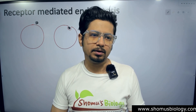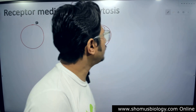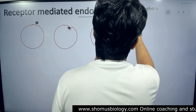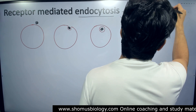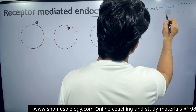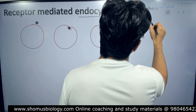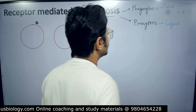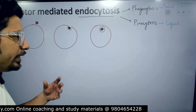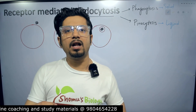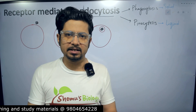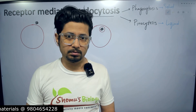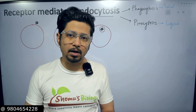Endocytosis can be classified as pinocytosis and phagocytosis. It is called phagocytosis when large or solid particles are ingested. It is called pinocytosis when liquid substances are taken up. When a macrophage, which is an immune system cell, engulfs a bacteria — the bacteria is solid — so macrophage eating a bacteria is an example of phagocytosis. So both phagocytosis and pinocytosis are examples of endocytosis.